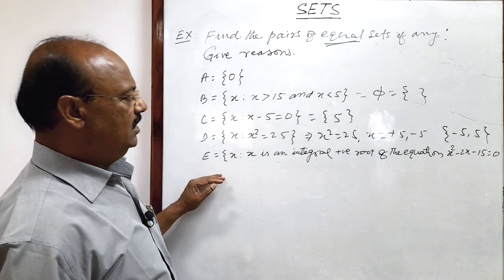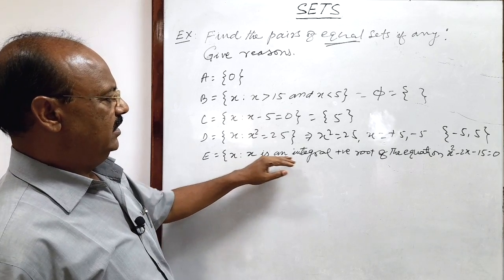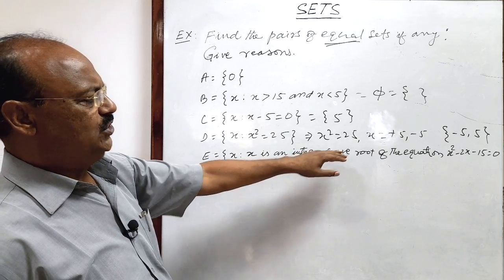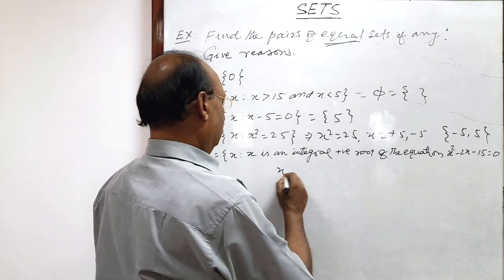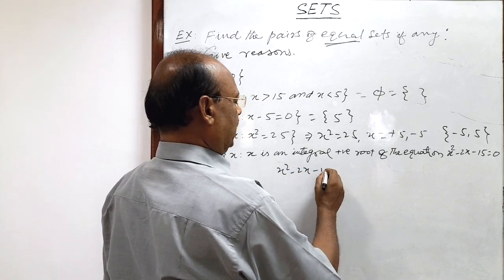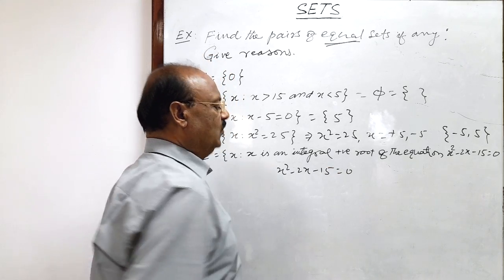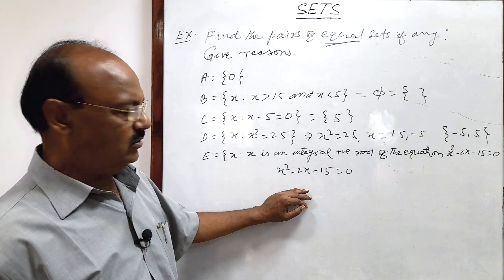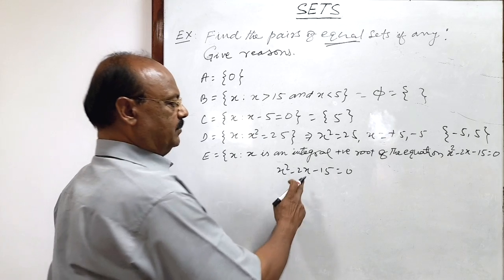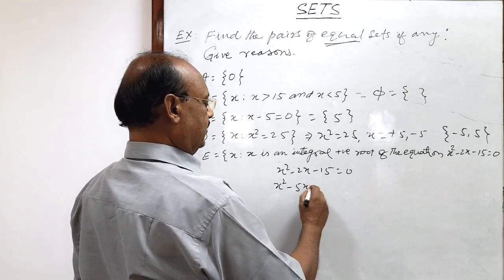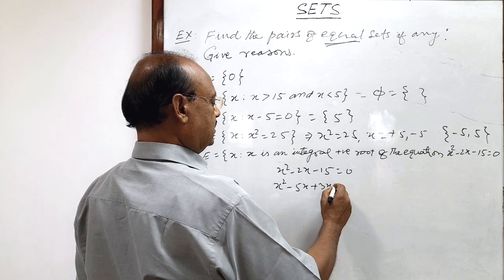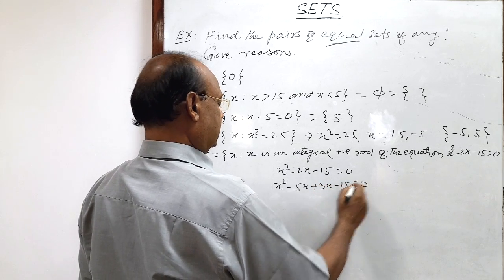And set E is x is an integral positive root of equation x square minus 2x minus 15 is equal to 0. Let us find out the root, find out the value of x by splitting the middle term. Here this is x square minus 5x plus 3x minus 15 is equal to 0.